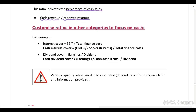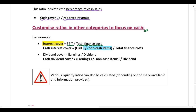Lastly, you can customize ratios in other categories to focus on cash. For example, to calculate interest cover we take EBIT and divide by total finance costs. If you want to customize this ratio to focus on cash, you need to eliminate non-cash items from EBIT — for example, eliminate depreciation — so that you are left with cash EBIT. Then take cash EBIT and divide by total finance costs to get the cash interest cover.